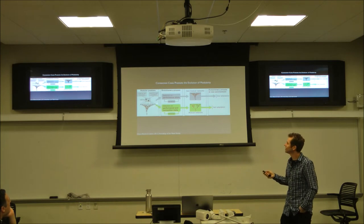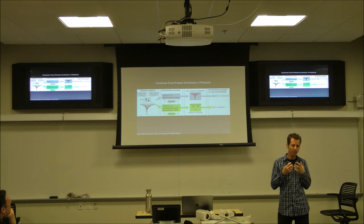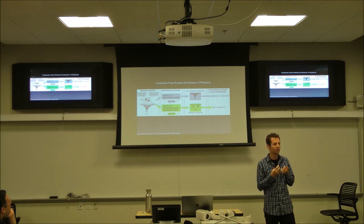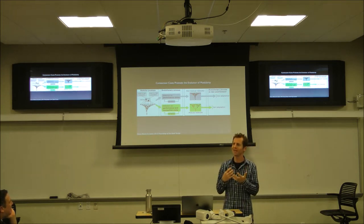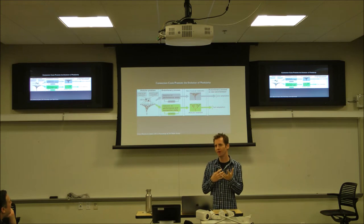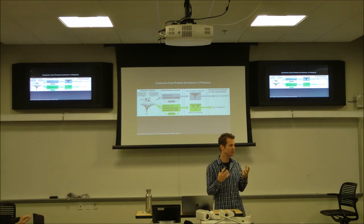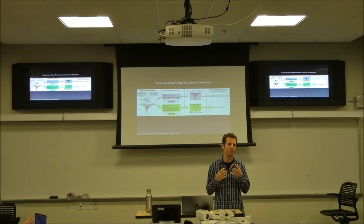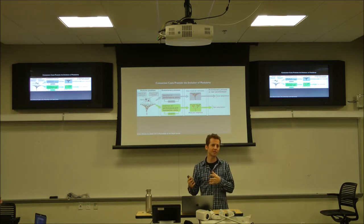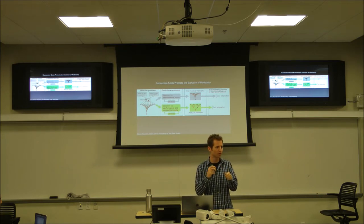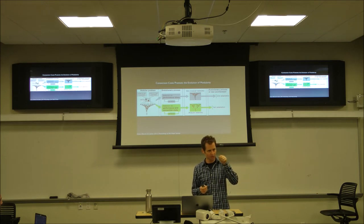One of the pieces of work we did recently is to show that if you have a neural network and you're trying to evolve it to solve some task, you would expect that if the problem is very modular and decomposable into separate modules, it might evolve to be modular. You would be wrong. For decades people have hoped that if a problem was modular, or if it changes in just the right way, you would get this nice modular decomposition — we almost never get it in our field.